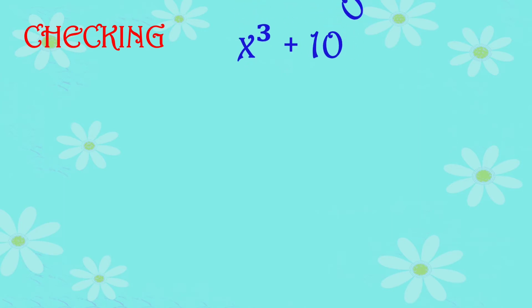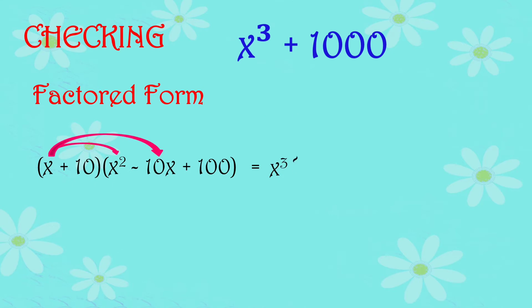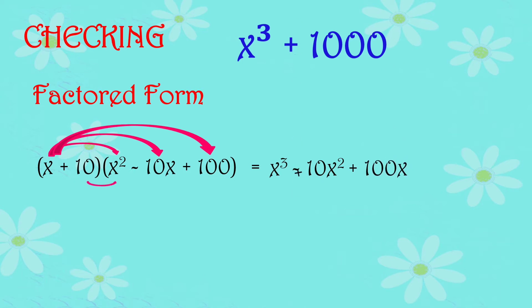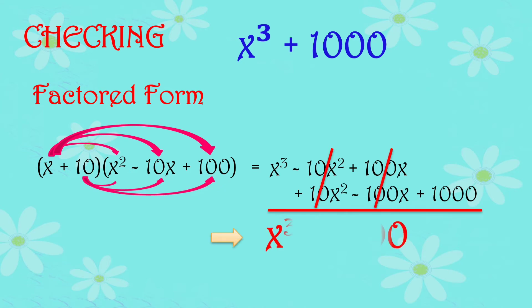Checking: We multiply back to verify our answer. After canceling terms that sum to zero, we're left with x cubed plus 1000, confirming our answer is correct.